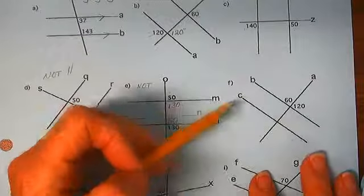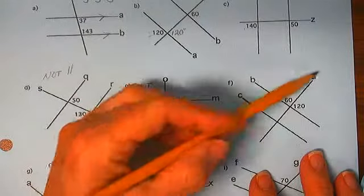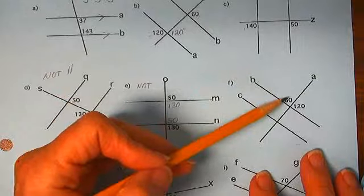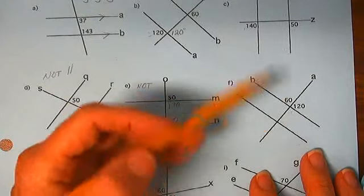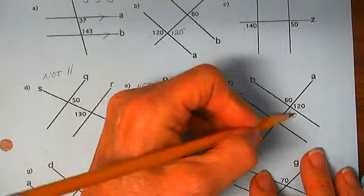What about these lines? Two lines cut by a transversal. This is 60, so this is 60.